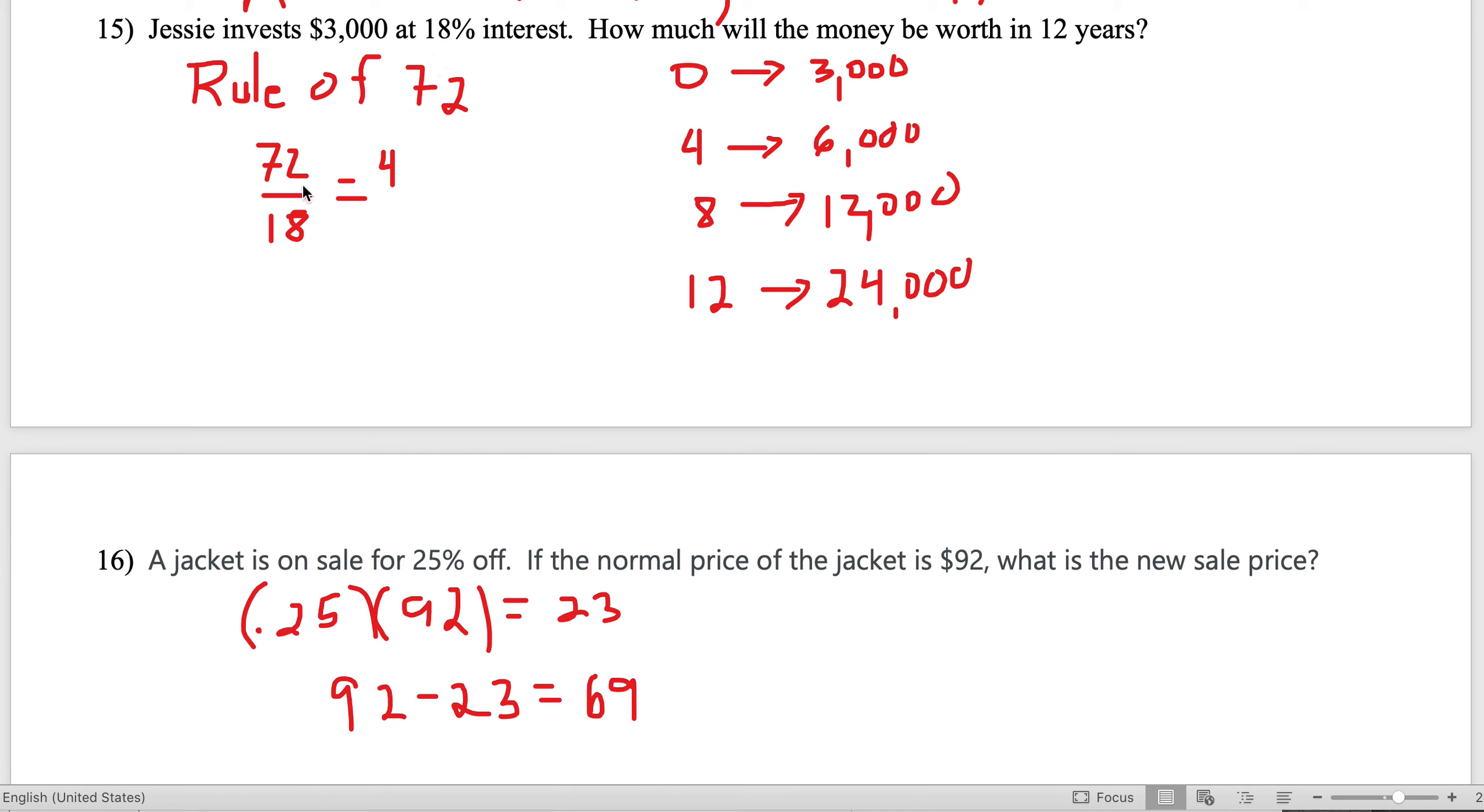Number 15: Jesse invests $3,000 at 18% interest. How much will it be worth in 12 years? We're looking at doubling. You could plug in the formula, but it's quicker to do 72 divided by 18, which is 4. Start with $3,000—in 4 years you have $6,000, in 8 years $12,000, in 12 years $24,000.